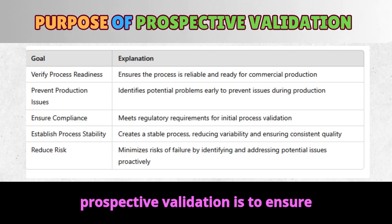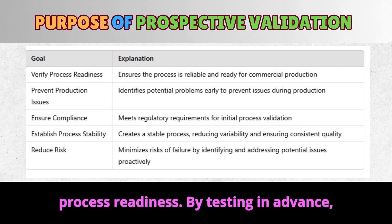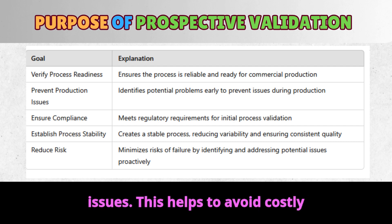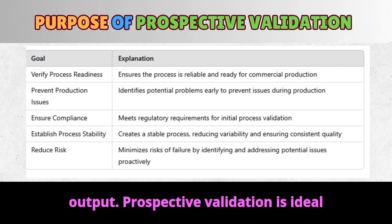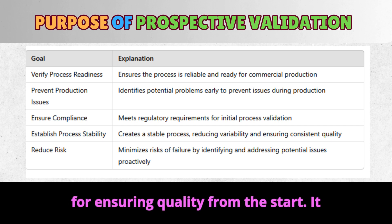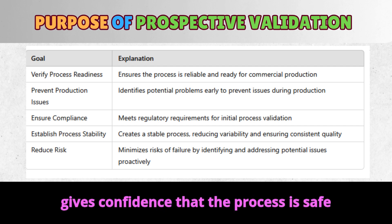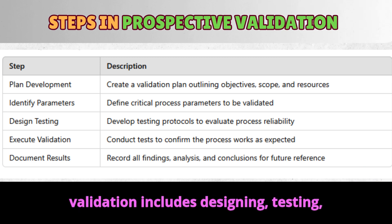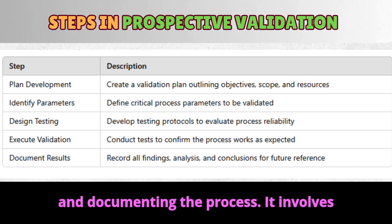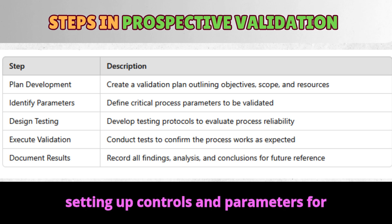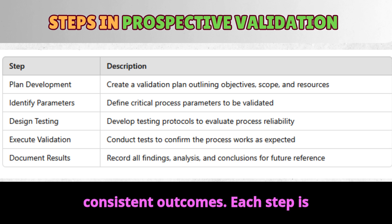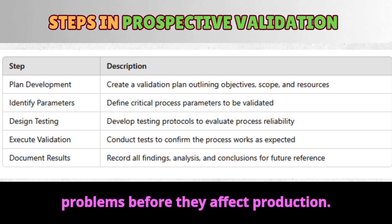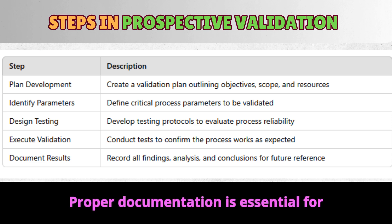The goal of prospective validation is to ensure process readiness. By testing in advance, manufacturers can prevent production issues. This helps to avoid costly changes and ensure reliable product output. Prospective validation includes designing, testing, and documenting the process. It involves setting up controls and parameters for consistent outcomes. Each step is carefully recorded to demonstrate quality and safety. This planning helps catch problems before they affect production.